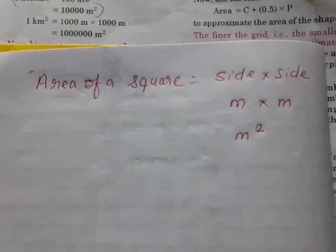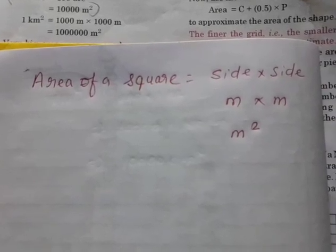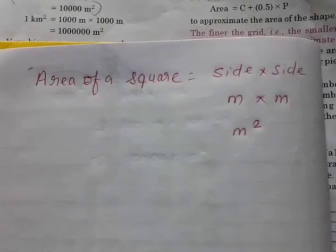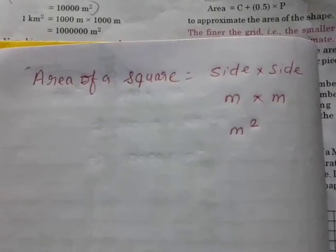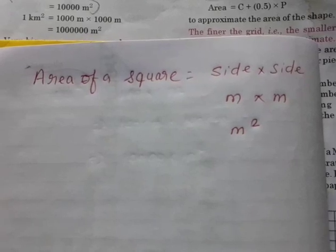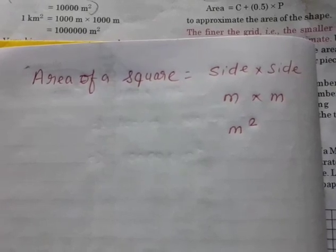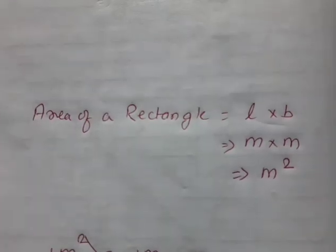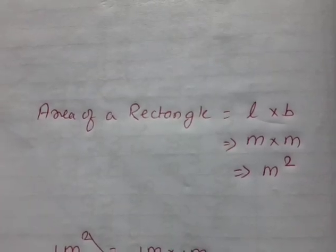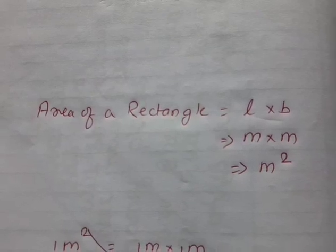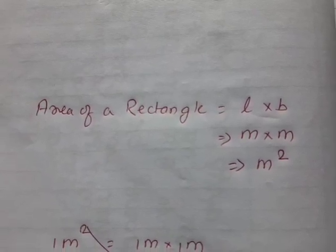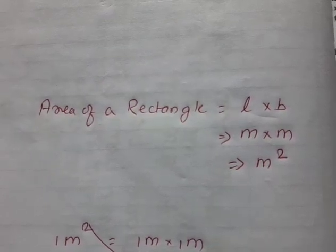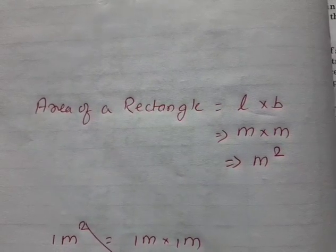To calculate the area of a square, we use the formula side into side. Therefore, once we take the unit for side as meter and second time side as meter, it becomes meter into meter, equal to meter square. To calculate the area of a rectangle, we use the formula length into breadth. If we take the length unit as meter and breadth unit as meter, therefore area becomes meter square.